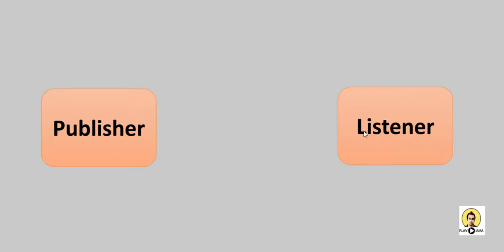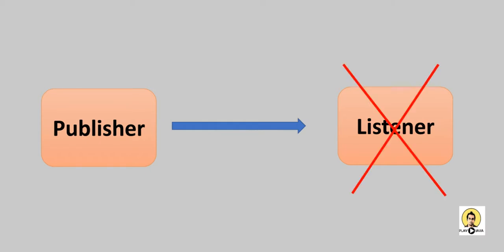Today we are going to talk about RabbitMQ. Whenever a publisher publishes a message to a listener — this can be a microservice, one sending to the other — if the listener is not available, then the message will be lost. To overcome this situation, we generally use some other services, and these services are nothing but messaging queues.